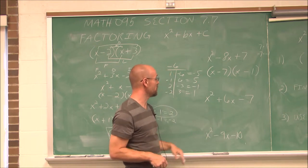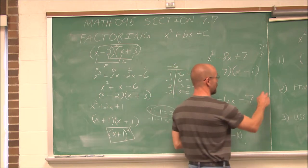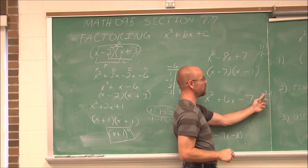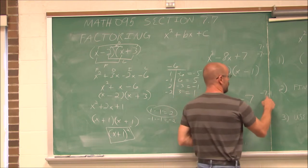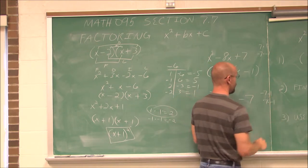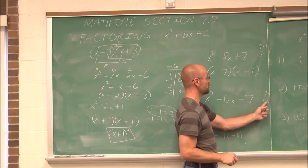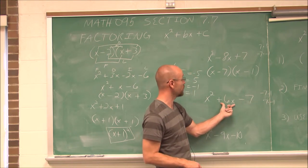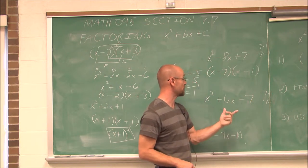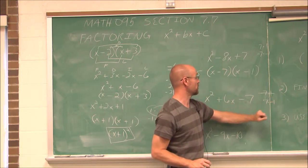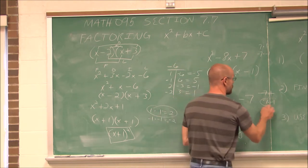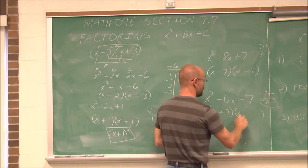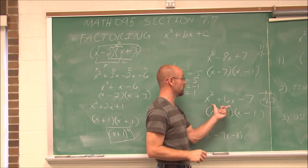Let's do one more. The factors of negative 7 — one factor must be positive and one negative, since we need a negative product. We could have negative 7 and 1, or positive 7 and negative 1. Negative 7 and 1 sum to negative 6 — not it. 7 minus 1 gives positive 6 — so positive 7 and negative 1 are the factors. The answer is x plus 7 times x minus 1. FOILing that back gives us right back to the original.